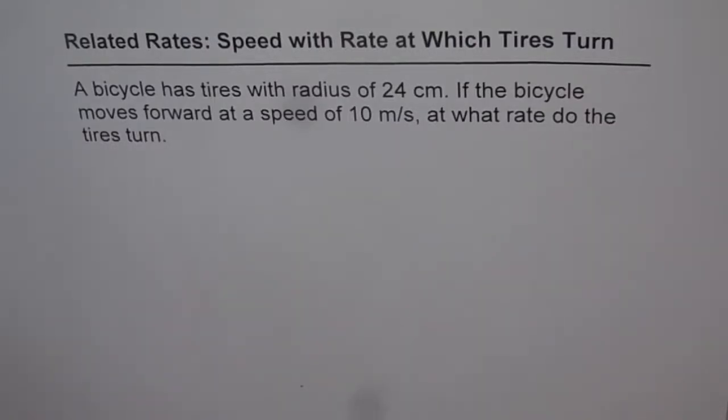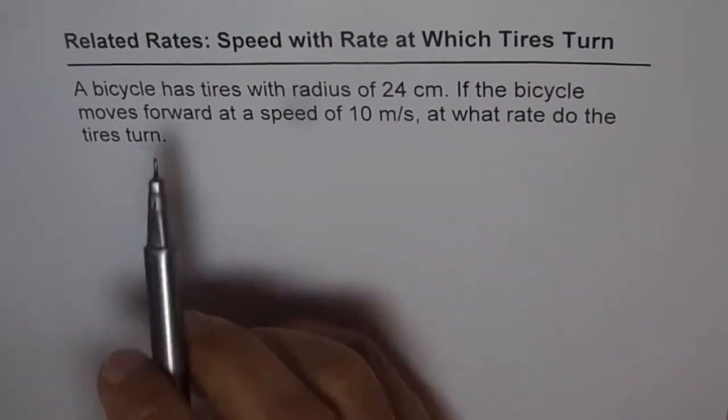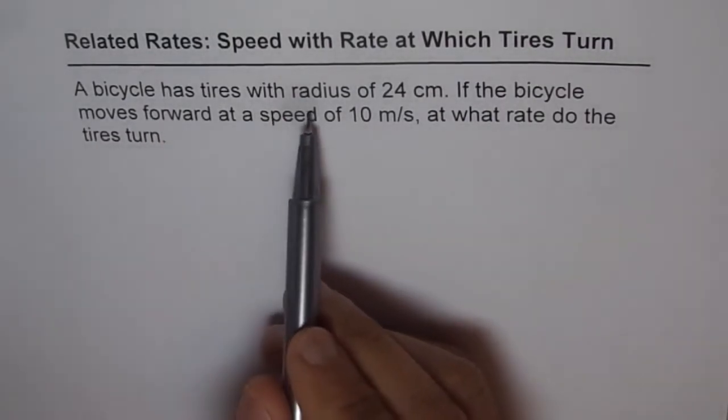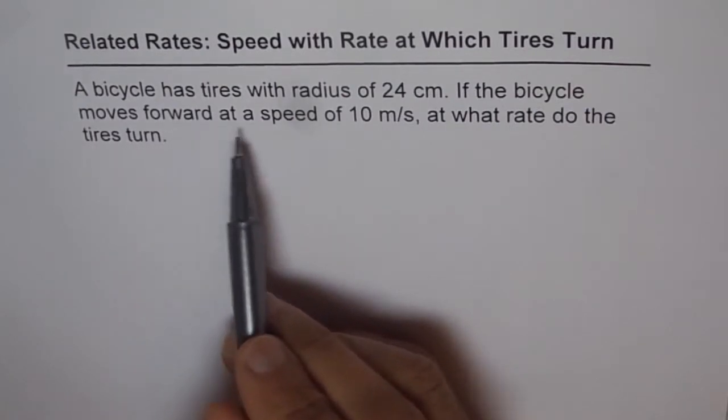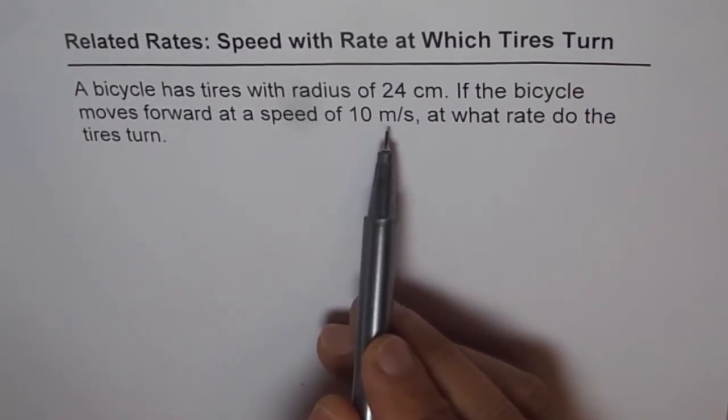In this example for related rates, we will link speed with the rate at which tires turn. The example is: a bicycle has tires with radius of 24 cm. If the bicycle moves forward at a speed of 10 m per second, at what rate do the tires turn?